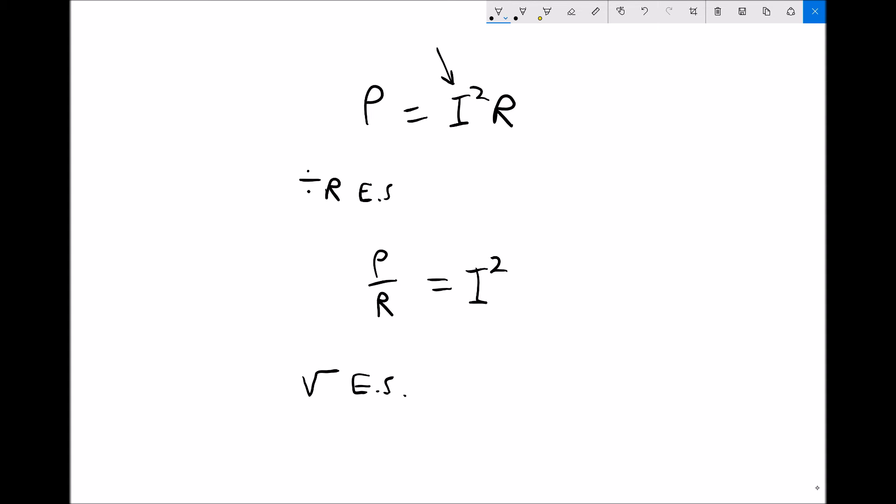Just take a little bit of care here, because what we're doing is we're taking the square root for the left-hand side of p divided by r. So we need to keep p divided by r in brackets. p divided by r was already there, and we're square rooting all of that.